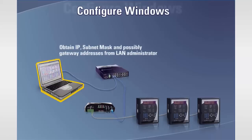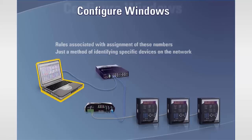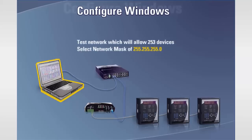First, we need to obtain the IP, subnet mask, and possibly gateway addresses from the LAN administrator. There are rules associated with the assignment of these numbers which go well beyond the scope of this course. For a test network which will allow 253 devices, you can select a network mask of 255.255.255.0 for all computers and relays. The IP address must, however, be unique. For the test network, IP addresses ranging from 3.94.244.1 through to 3.94.244.253 can be used.